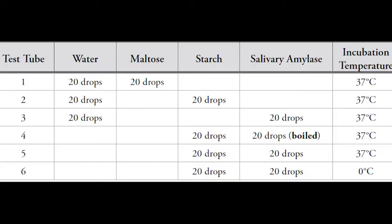Add 20 drops of water and 20 drops of maltose to test tube 4 with salivary amylase. Add 20 drops of starch and 20 drops of salivary amylase to test tube 5.